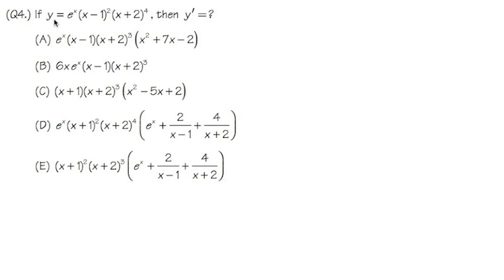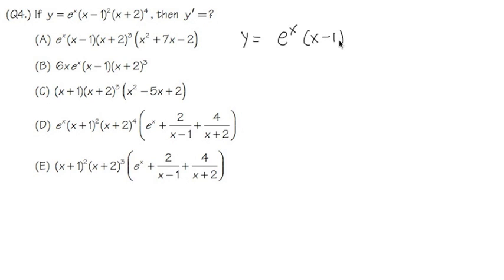For question number four, our equation is y equals e to the x times x minus 1 squared times x plus 2 to the fourth power. It's a product of three functions, and we are trying to find the first derivative of this. Whenever you have a product of more than two functions, and especially you have exponents here, this is what you should do. Keep algebra in mind.